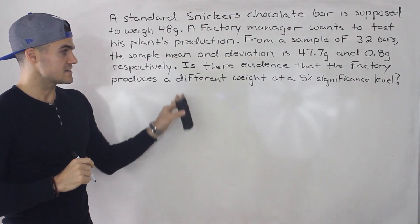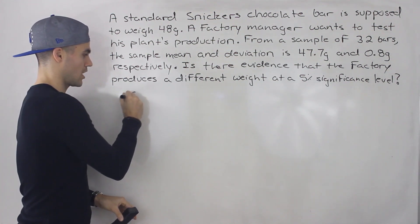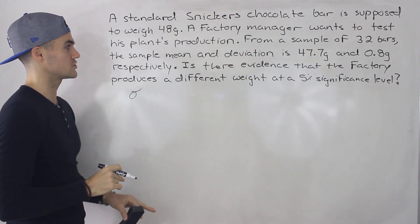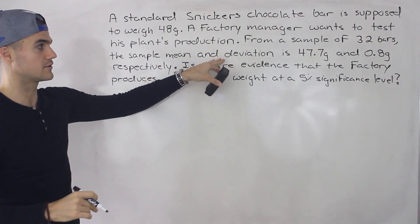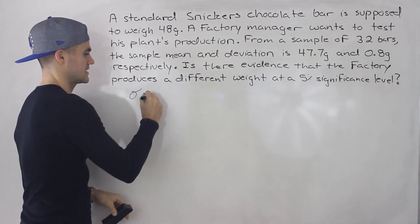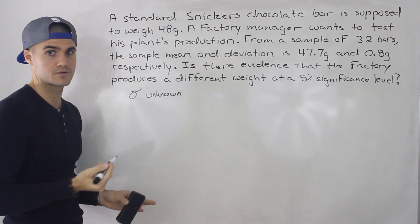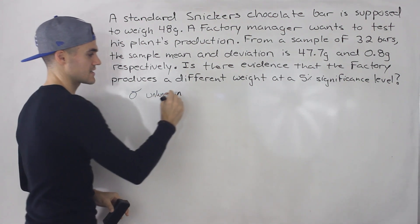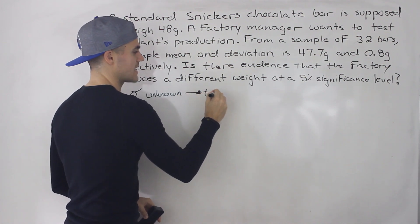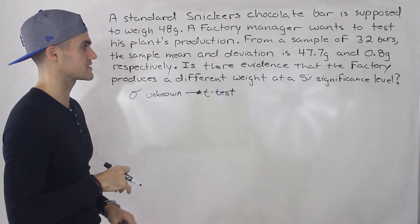Notice how this question compares to questions before. In terms of the population standard deviation, notice we're not given a population standard deviation. We're given the sample standard deviation — the 0.8 grams — but the population standard deviation is unknown. That's the first thing I always look for: is it known or unknown? In this case it's unknown, so we're going to have to use a t-test instead of a z-test. We're going to use the t-distribution to do this hypothesis testing.